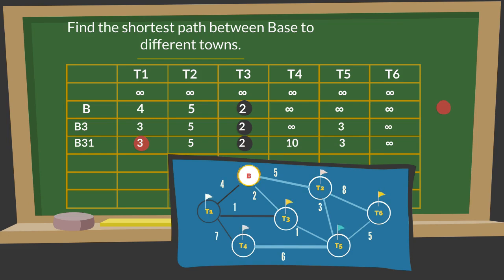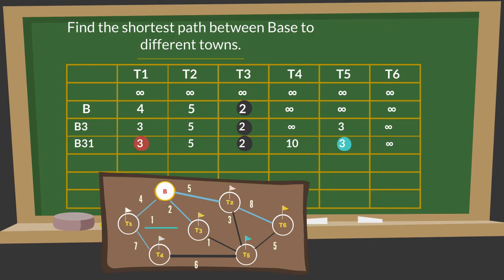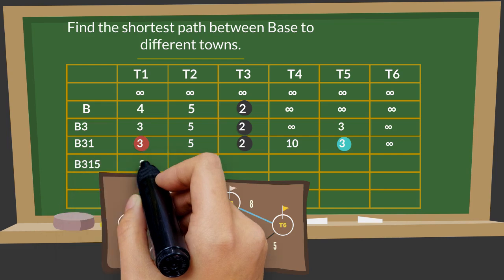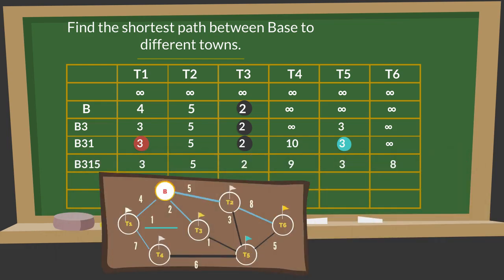Town 5 will be included and will become source to find the shortest paths to other towns. Town 5 is connected with town 4, town 3, town 2, and town 6. The distance from base to town 2 via town 5 is 6. It is higher than the current working value of town 2, so it will remain unchanged. The distance from base to town 4 via town 5 is 9. It is lesser than previously calculated distance 10, so it will be updated.